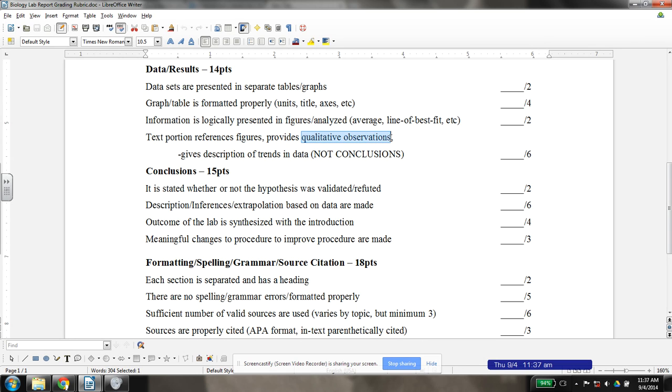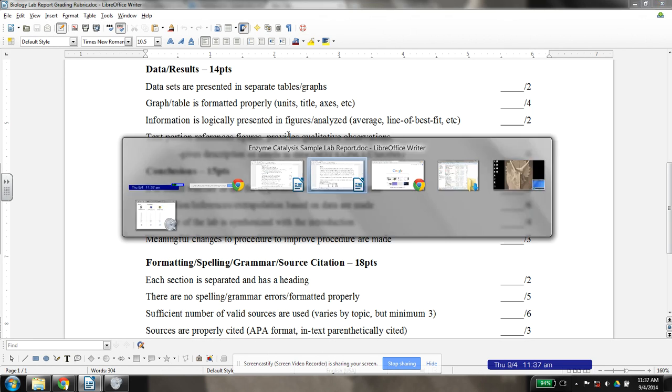Qualitative observations oftentimes get forgotten. Things you just simply happened to note as you were doing the lab, like maybe over time the solution you were using seemed to change in color, or the item in the test tube became more thick. Those aren't things that necessarily get numerical values and don't show up in graphs, but they're things that still are important and should be put into the results section.